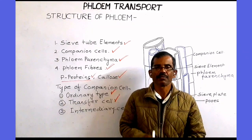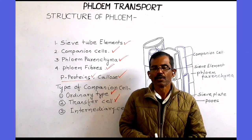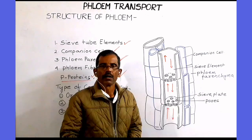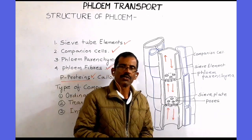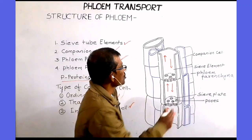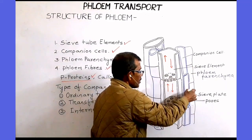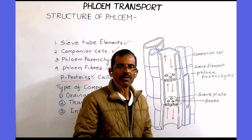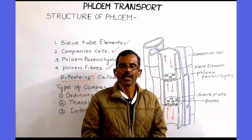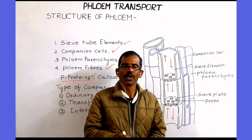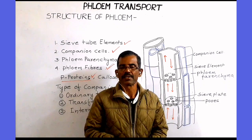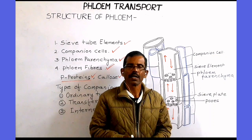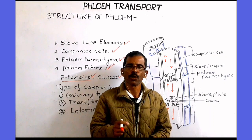Intermediary cells are found in plants where phloem loading occurs through the symplast. The other cellular constituent of the phloem is phloem parenchyma. These are living cells concerned with the storage of food substances in the form of starch and fat. Phloem parenchyma is absent in monocots.